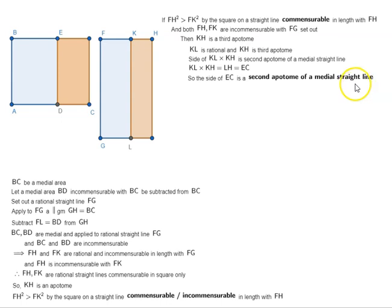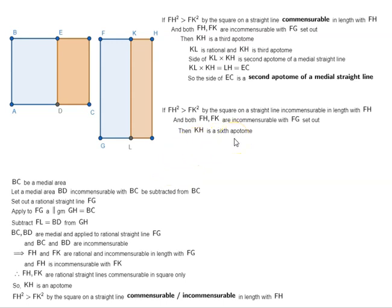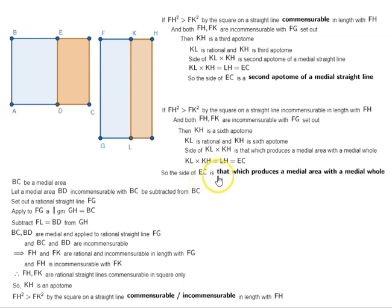Now let's look at the alternate possibility — Case 2. If FH squared is greater than FK squared by the square on a straight line incommensurable in length with FH, and both FH and FK are incommensurable with FG set out, then KH is a sixth apotome. Since KL is rational, being equal to FG, and KH is a sixth apotome, the side of KL by KH is that which produces a medial area with a medial hole. And since KL by KH equals LH, which equals EC, the side of EC is that which produces a medial area with a medial hole.